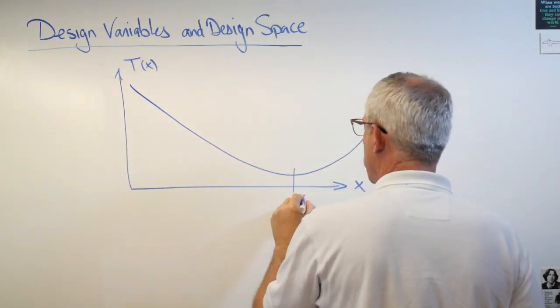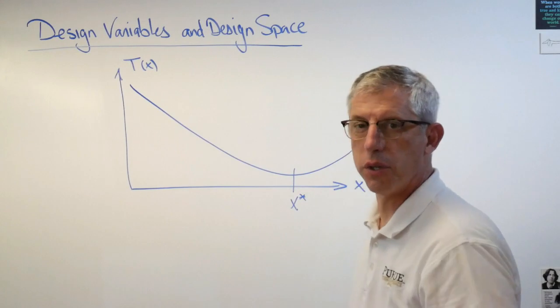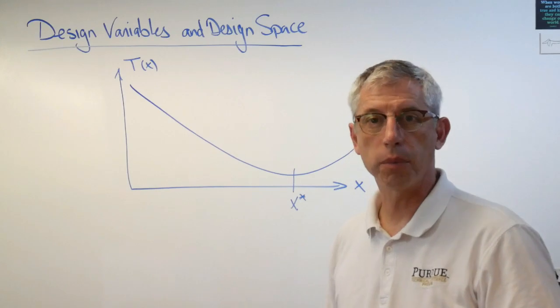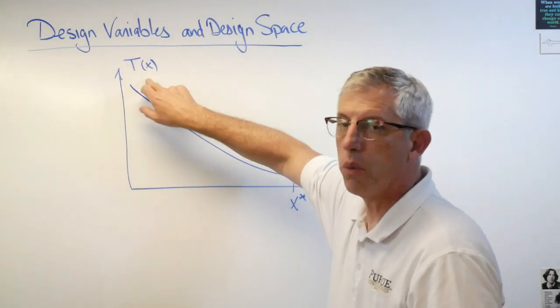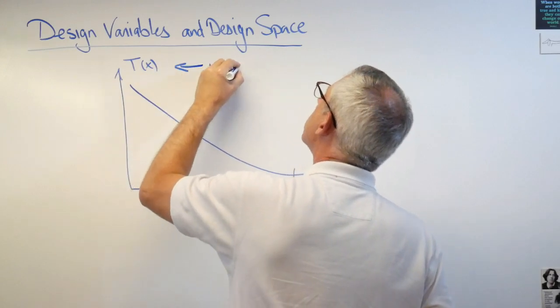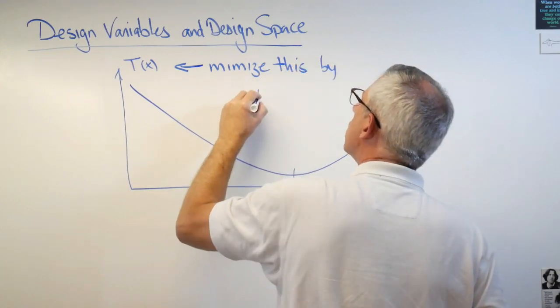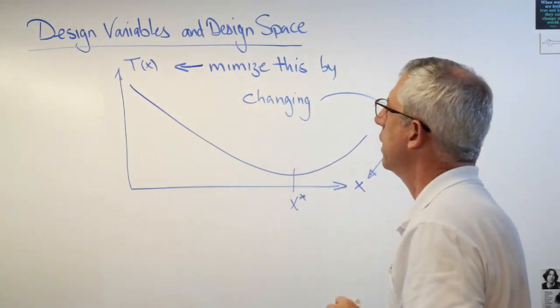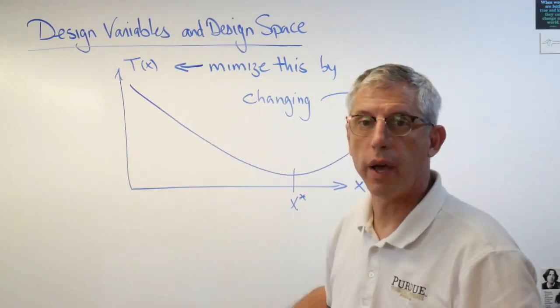Right there is the minimum. We'll call that x star and it's 87.208 meters I believe. This is a picture of the optimization problem. Anytime you can turn a mathematical expression into a picture it's a good idea to do that. So this is the thing we're calculating. This is the thing we're trying to minimize. Minimize this by changing that.